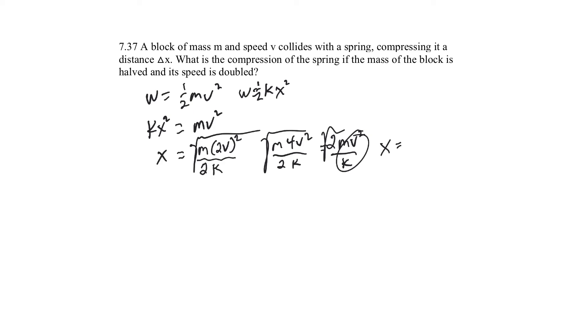The old x, when a certain collision, it says compressing at a distance of delta x. So, it compresses it a certain distance, and this new one is going to be the square root of 2 times that. So, whatever the original distance was, that's delta x. This is going to be square root of 2 times delta x.